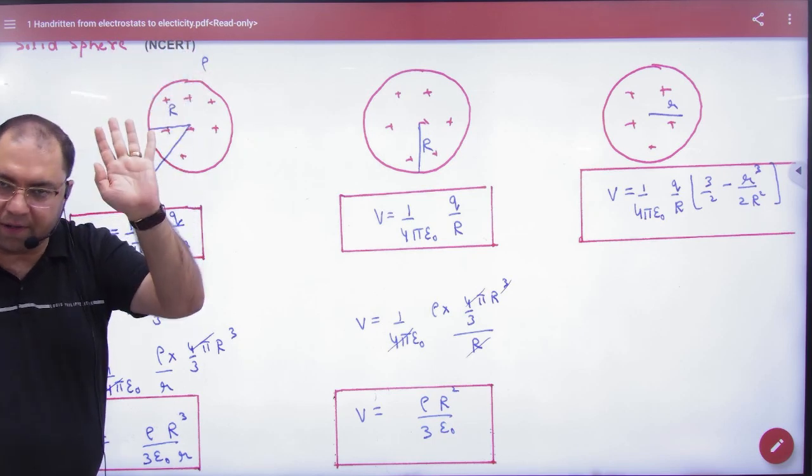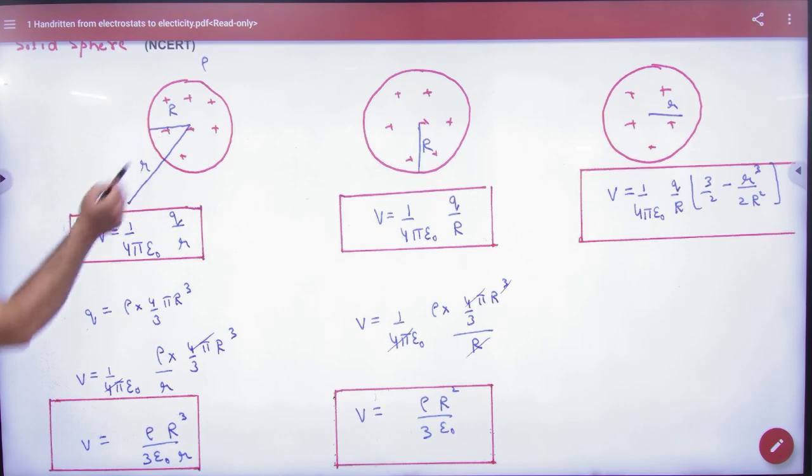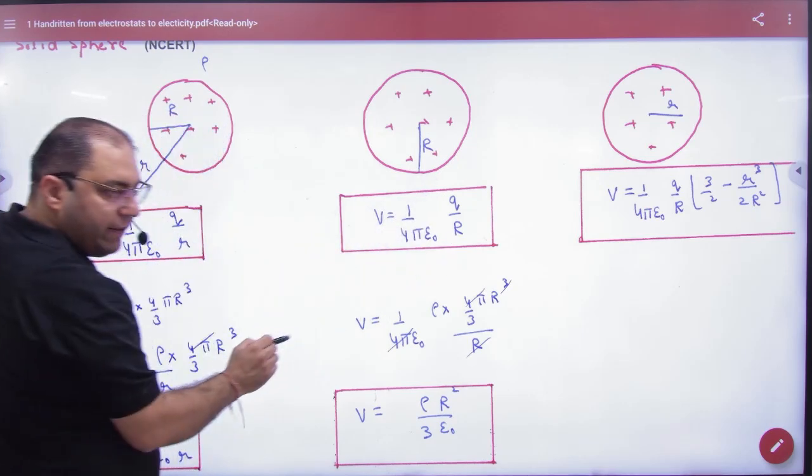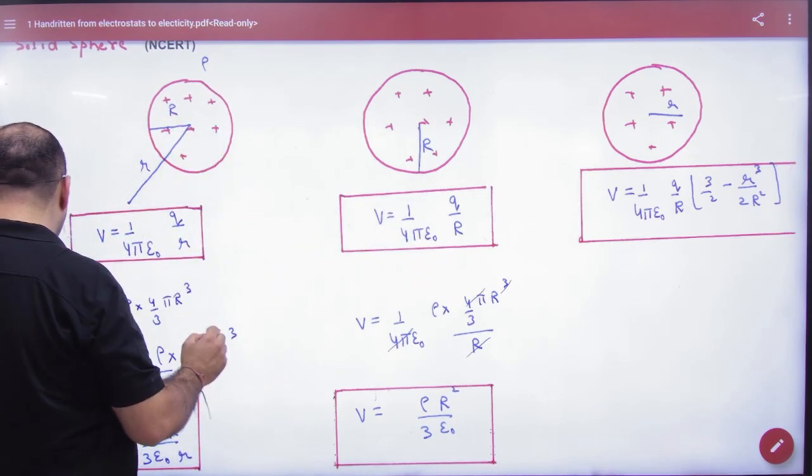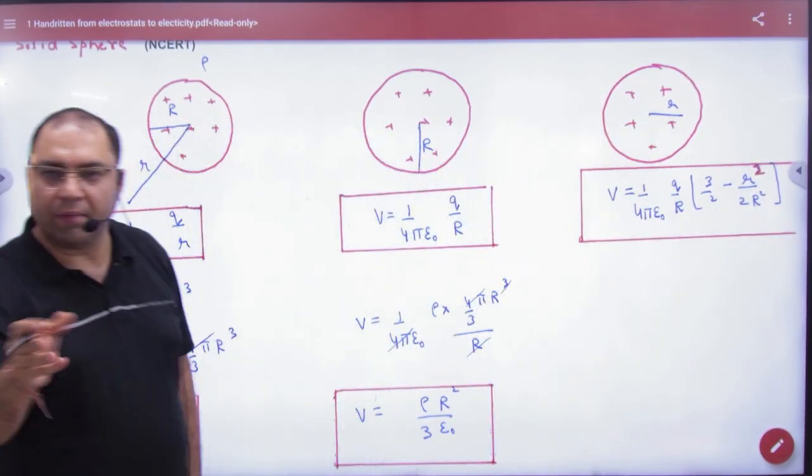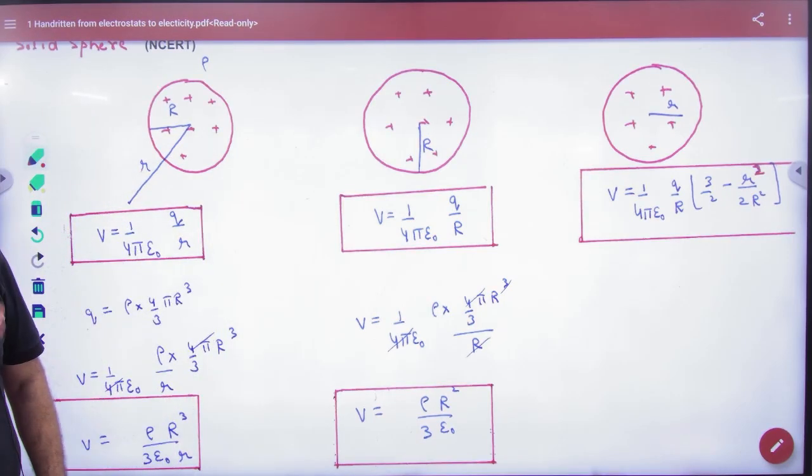What is the formula? Outside, V this formula. Surface, capital R. Inside, V formula here - square, square. This formula I have written inside.